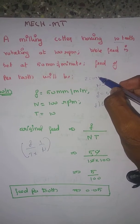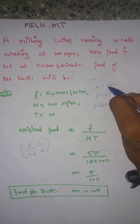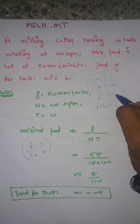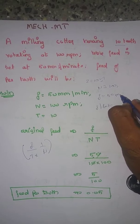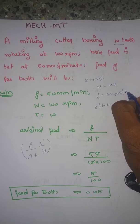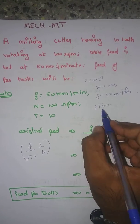The speed is 100 rpm. The feed is 50 mm per minute. We're using feed per tooth.